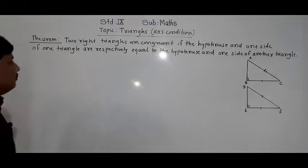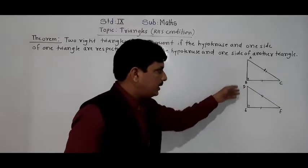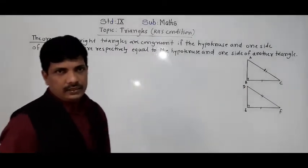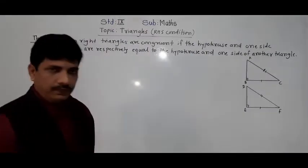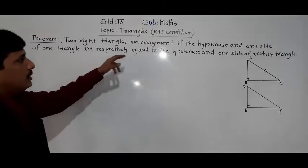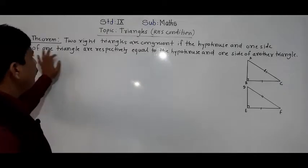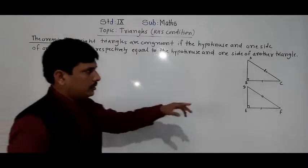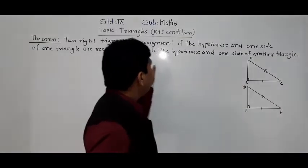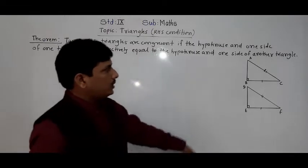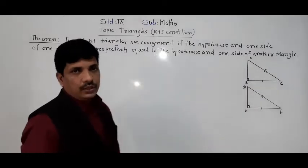Here, what is given — two right triangles are given. Triangle ABC and triangle DEF are right angle triangles. Triangle ABC is right-angled at B, and triangle DEF is right-angled at E. The triangles are congruent if the hypotenuse and one side of one triangle are equal to the hypotenuse and one side of another triangle.